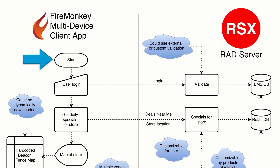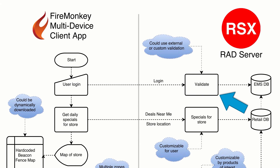When the customer fires up the application, the first thing we're going to do is log on, and this is going to validate their credentials against the EMS database. You could use an external validation system — whatever system you have in place — or you could just assign your customers a unique ID, and then the customer never has to deal with a username and password. It just validates them automatically when they connect, so there are lots of options available for how you want to validate your customers.